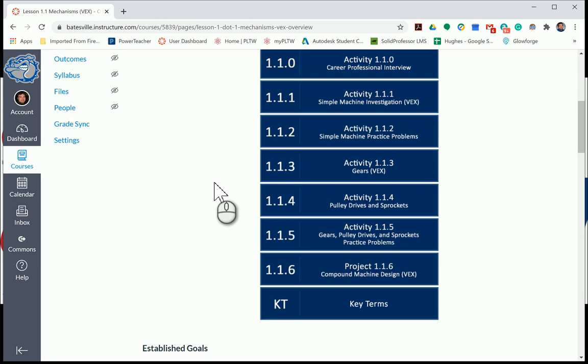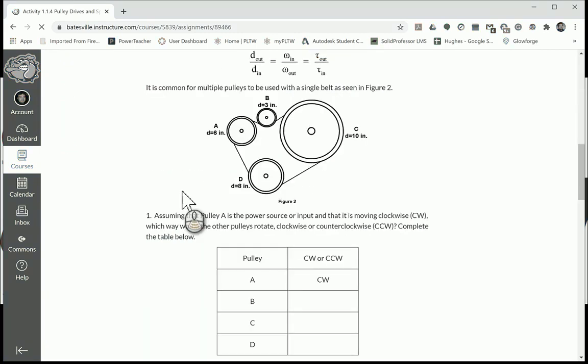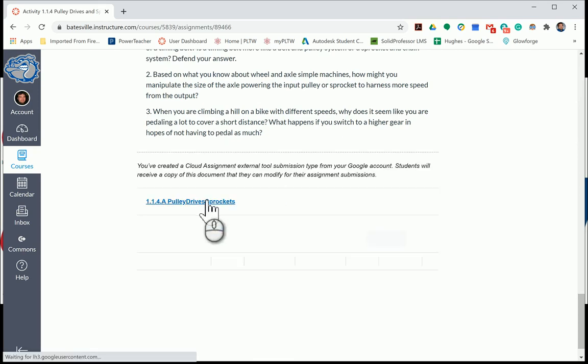Alright everyone, in this video we're going to take a look at activity 1.1.4, Pulley Drives and Sprockets. When you click on Pulley Drives and Sprockets in Canvas, this is going to be set up in a Google Doc. This is a very short activity, so once we have Google load for us, we will see what we're working with. I'm going to open it up into a new tab and walk you through what this is going to look like. I'm going to do an example from each kind of section, and then the rest of this will be up to you to finish and submit.